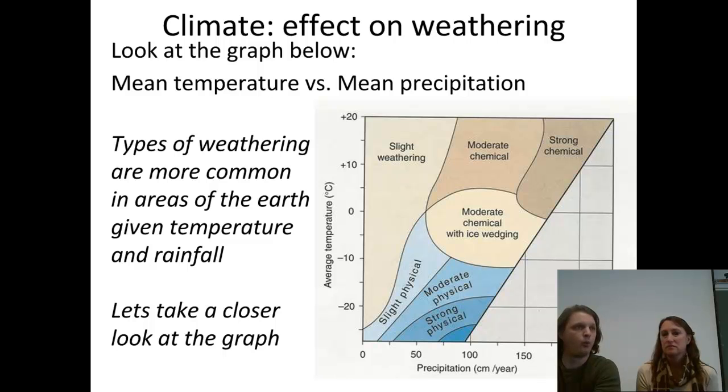So if we think about what frost wedging requires, if we're thinking about mechanical weathering, we need some kind of water source. And we need a fluctuation in temperature. So if in a climate we never see the temperature go below freezing, then we really can't expect there to be a whole lot of frost wedging. So we're going to take a closer look at this diagram and take a look at some different areas and see what types of weathering are actually going on there.